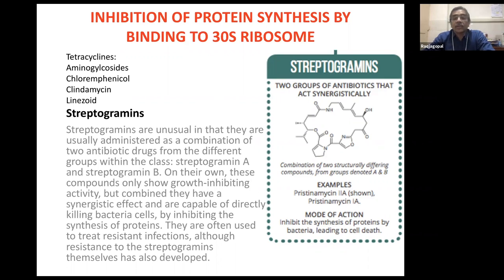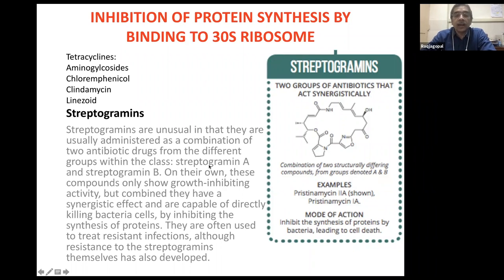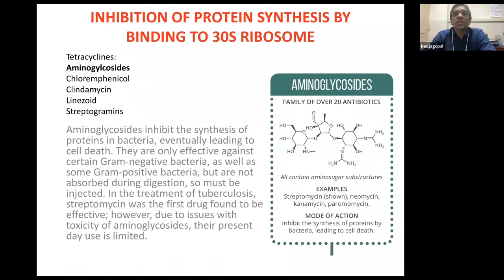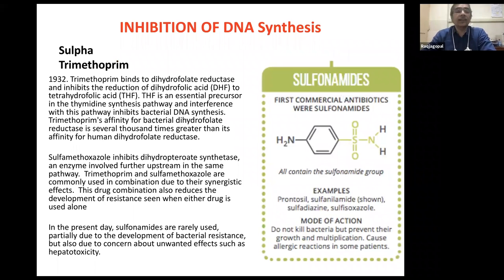Streptogramins are a newer class of antibiotics that also inhibit bacterial protein synthesis. They are given as a combination of Streptogrammin A and Streptogrammin B. Streptogrammin A alone is only bacteriostatic, but when given together with Streptogrammin B, the combination becomes bactericidal — it is able to kill the bacterial cells.